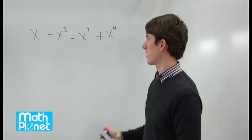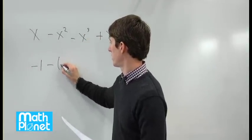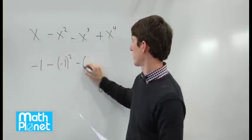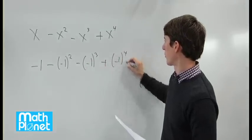So we just want to plug in negative one and see what we get. Negative one minus negative one squared minus negative one cubed plus negative one to the fourth power.